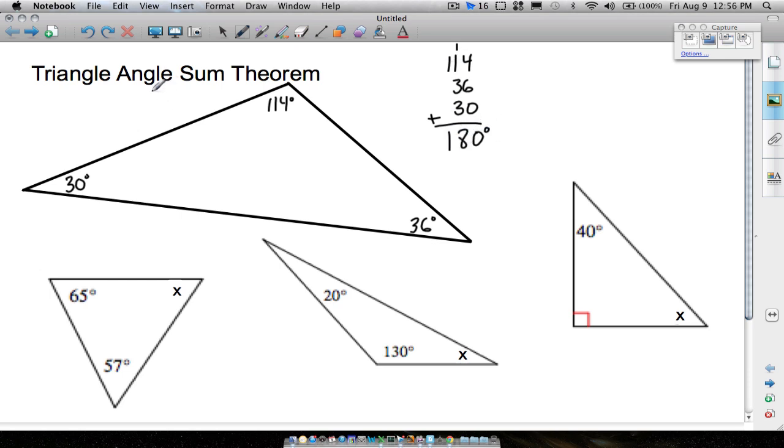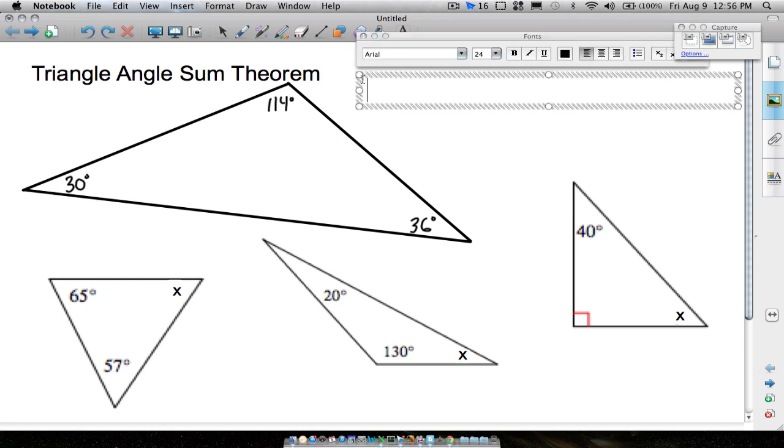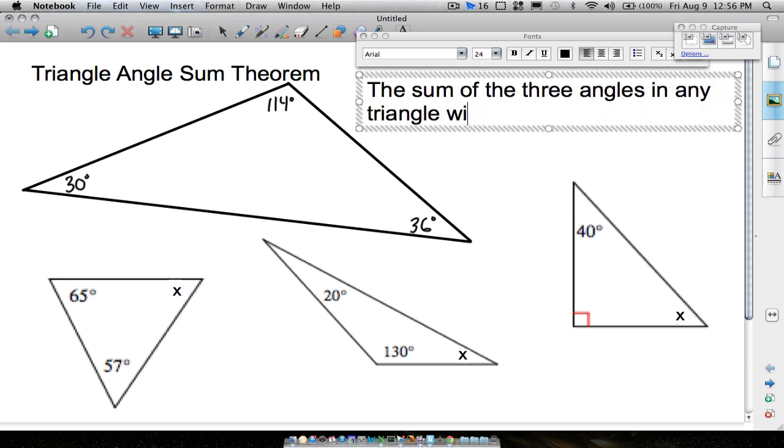There's your triangle angle sum theorem. I drew a totally random triangle. If we add up the three degrees inside of it, this is your rule that you want to remember about the three angles in a triangle: the three angles will always add to give you 180 degrees. That's what the triangle angle sum theorem is. So let's write that down. The sum of the three angles in any triangle will always be 180 degrees.